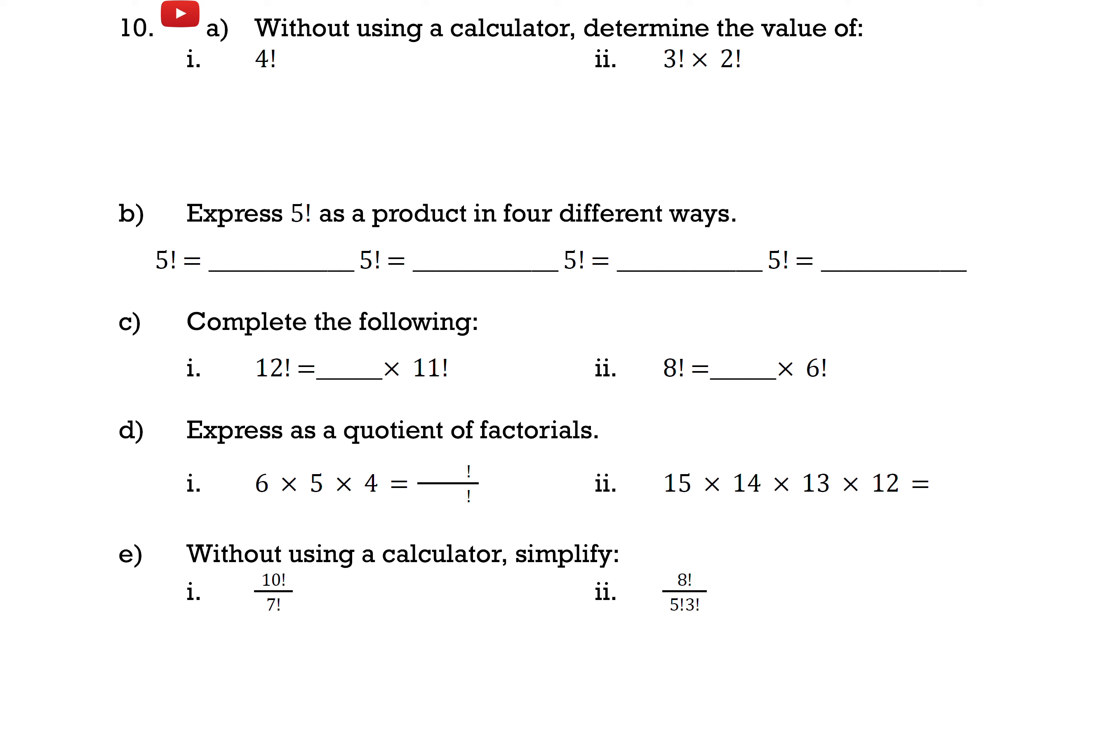Remember that a factorial is just the product of all the positive integers less than or equal to n. So here for 4, we would have 4 times 3 times 2 times 1. 4 times 3 is 12, 12 times 2 is 24, and 24 times 1 is 24.